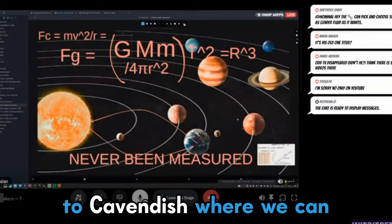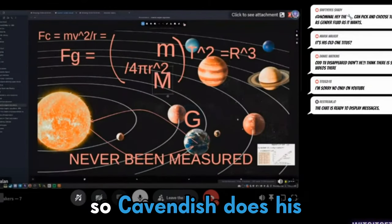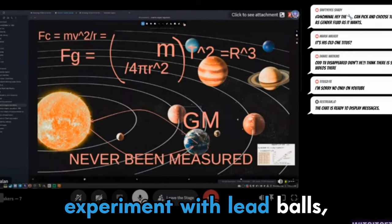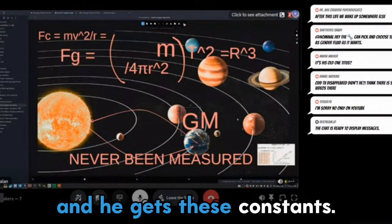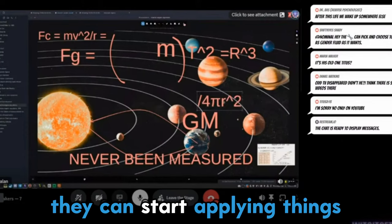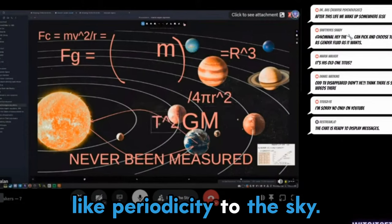So let's take it back a second to Cavendish, where we can establish our constants. So Cavendish does his experiment with lead balls and he gets these constants. Now, with these constants, they can start applying things like periodicity to the sky.